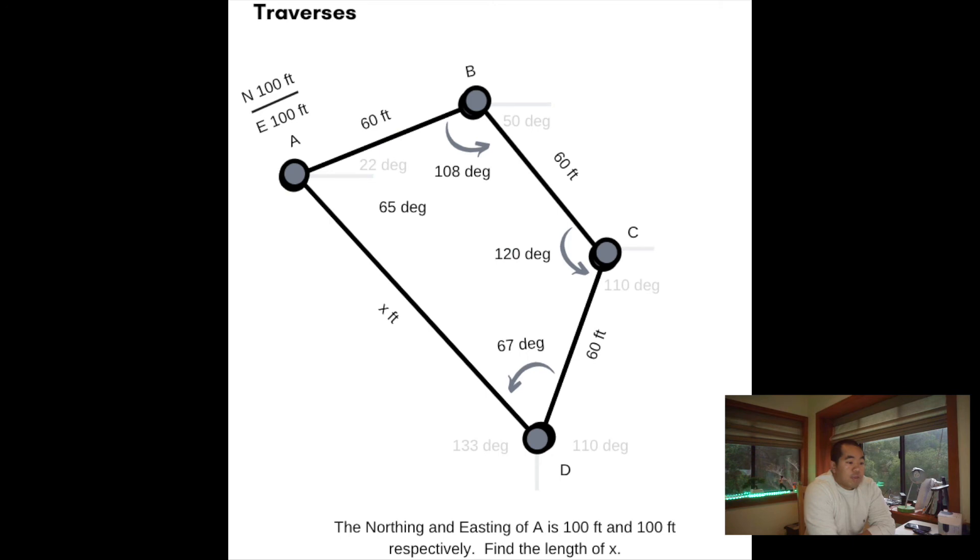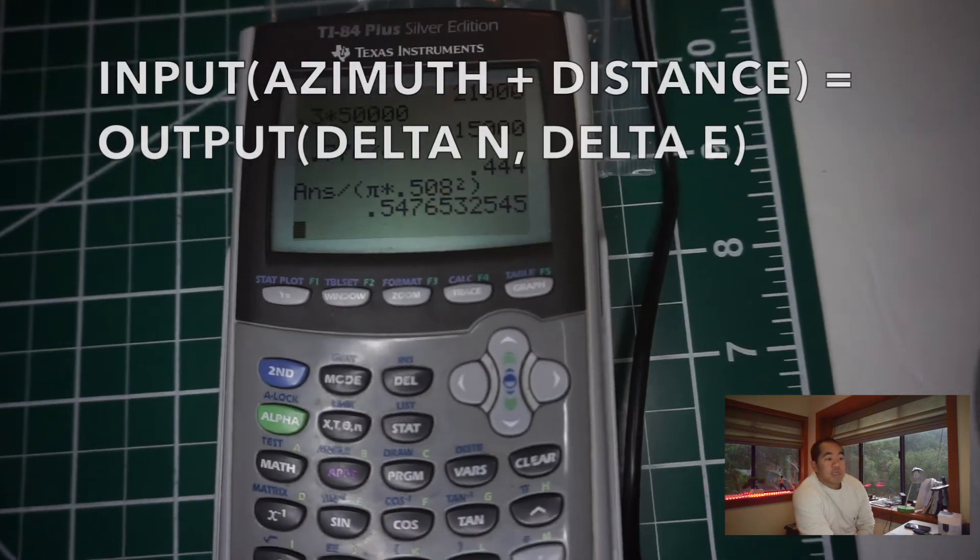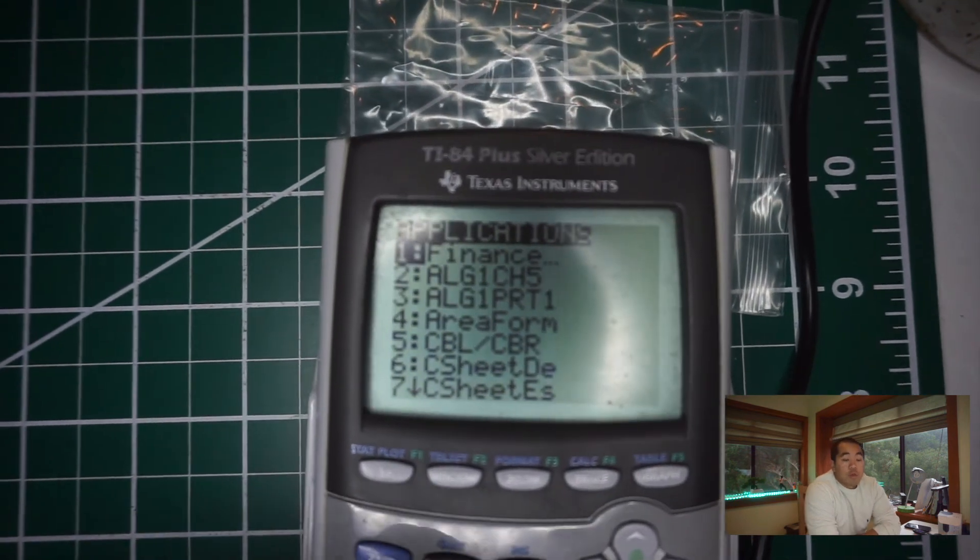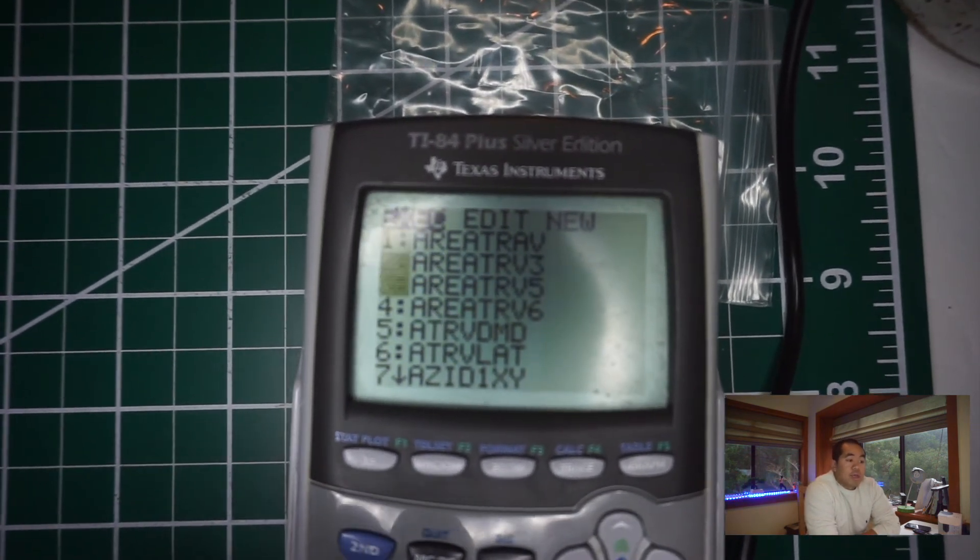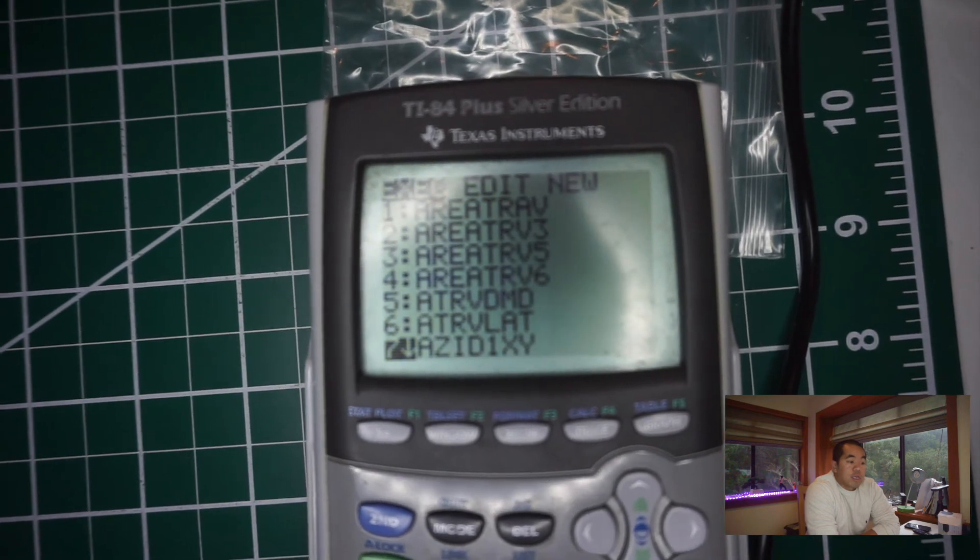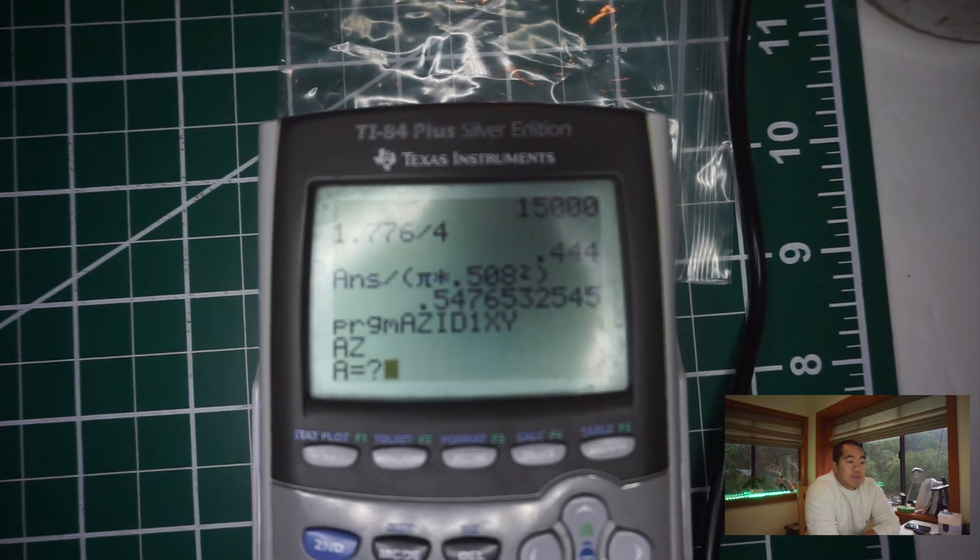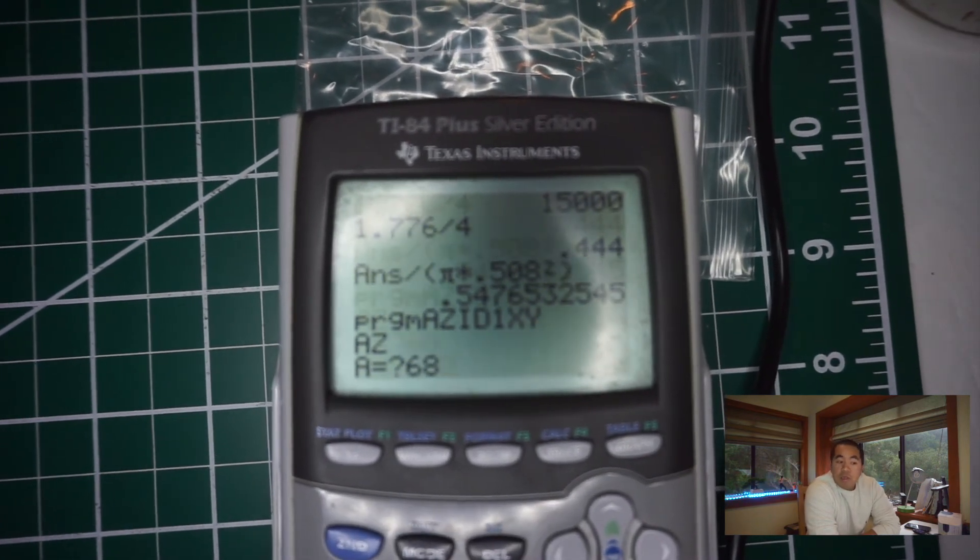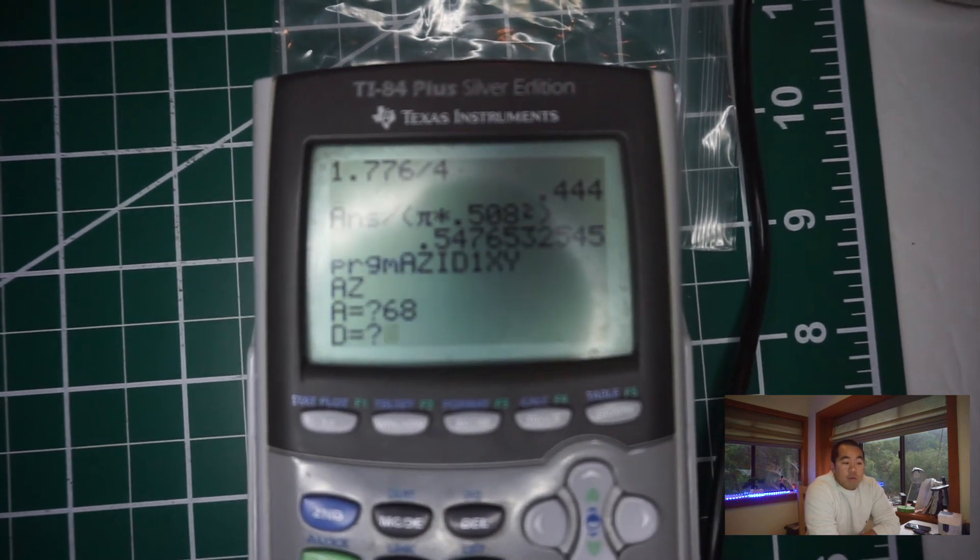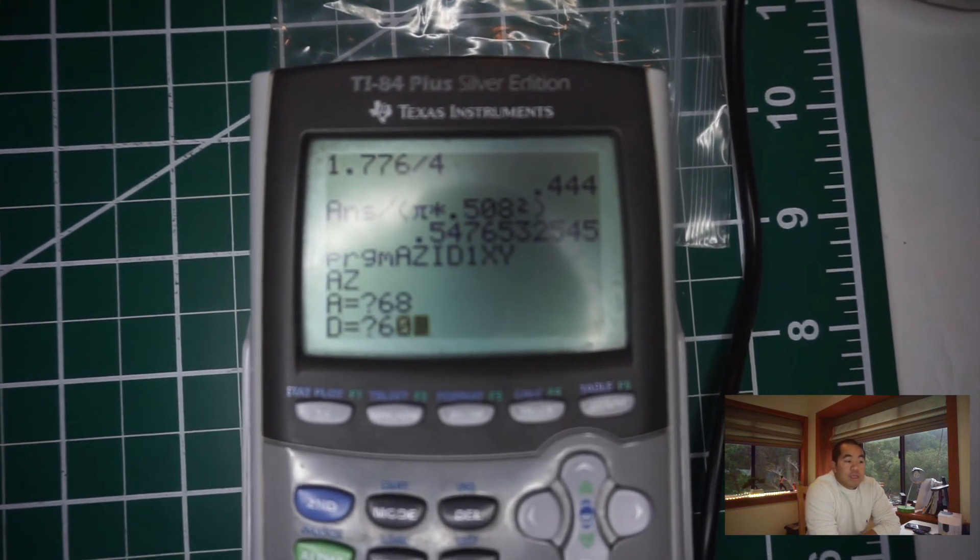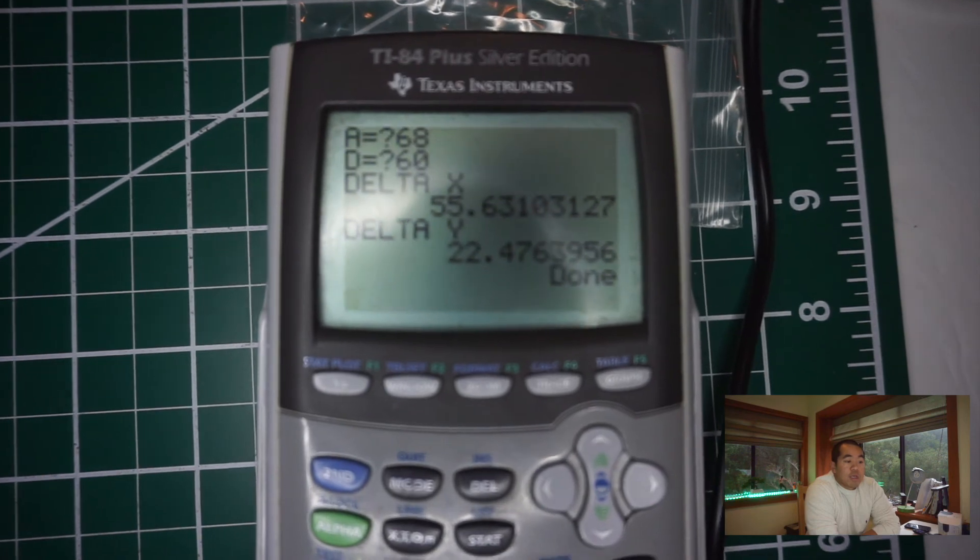What we found was that the northing and easting of point B was 122.47 and 155.63, and we have an azimuth angle of 68 and a distance of 60. So basically how we go from point A to point B is we use a distance and we use an azimuth angle and then we get the translation from point A to point B, it's basically a bearing kind of like a vector almost.